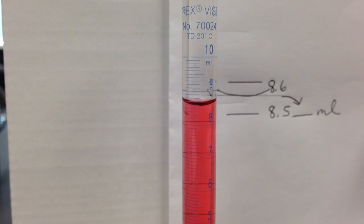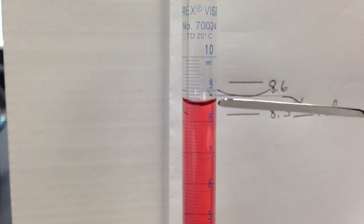How far between 8.5 and 8.6 does this measurement lie? To determine that, you want to get your eye at the level of the meniscus, which is the bottom of the curved surface.